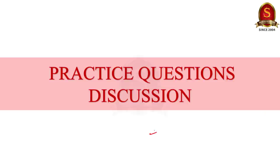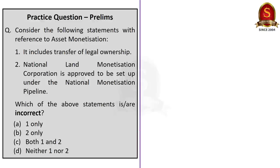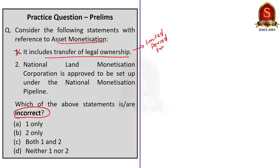We have two practice prelims questions today. The first question is on asset monetization — we need to find the incorrect statement. Statement 1: Asset monetization involves transfer of legal ownership. This is incorrect — asset monetization only includes a limited period transfer; at the end of the contract, the asset is transferred back to the public authority and is not sold.